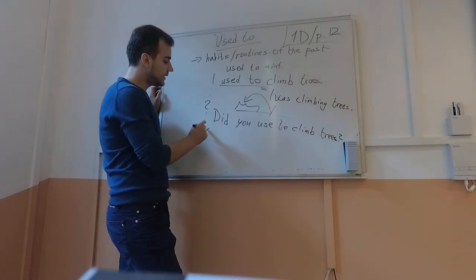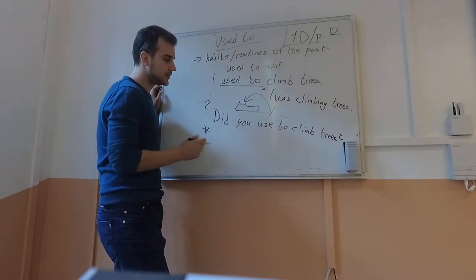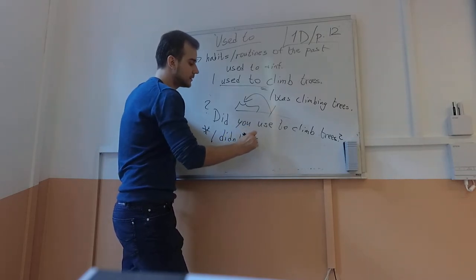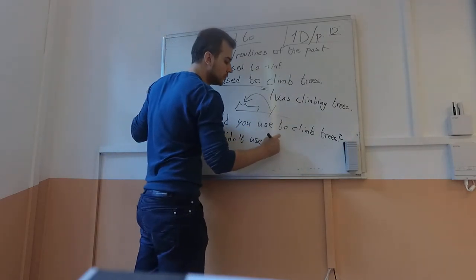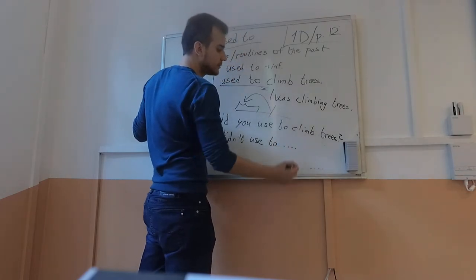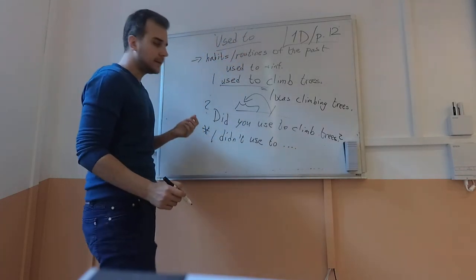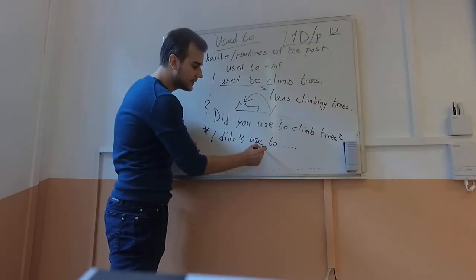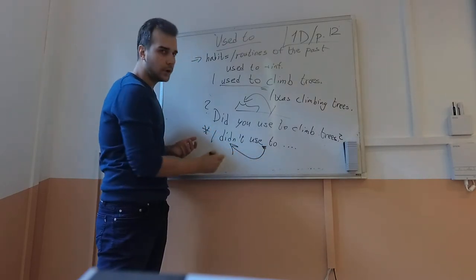And so on. In the negative, you can just say: I didn't, or I didn't used to. Alright? And you say what? Don't forget that just like in the past simple, the past will go to the auxiliary verb.